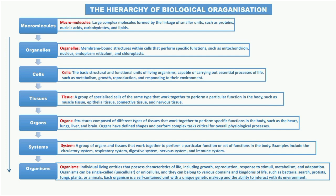Single-celled organisms are called unicellular while those with multiple cells are called multicellular. Examples of unicellular organisms include bacteria and protists; examples of multicellular organisms include fungi, plants, and animals. Each organism is a self-contained unit with a unique genetic makeup and the ability to interact with its environment.